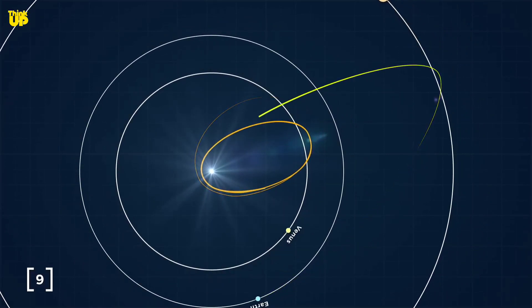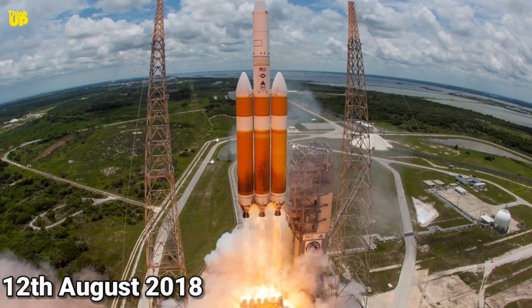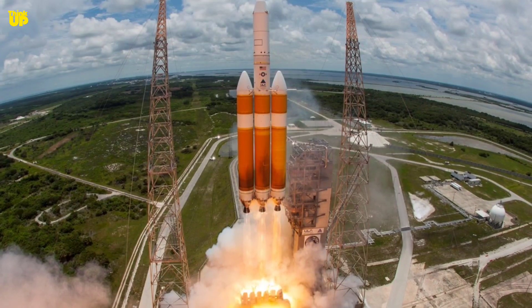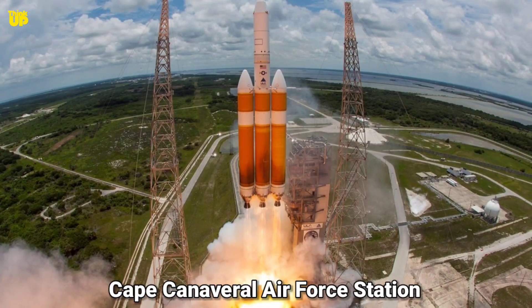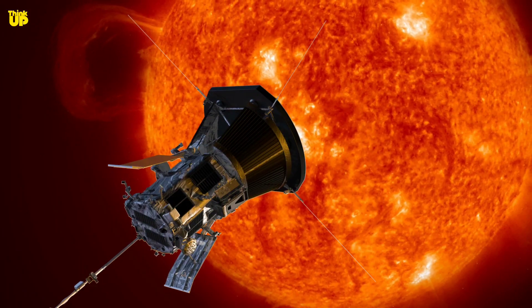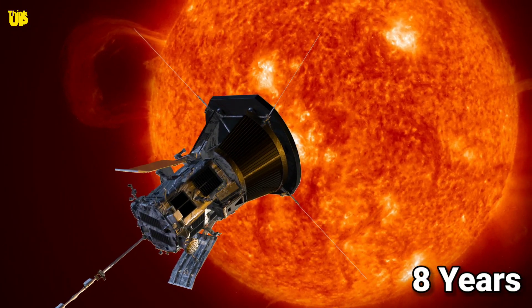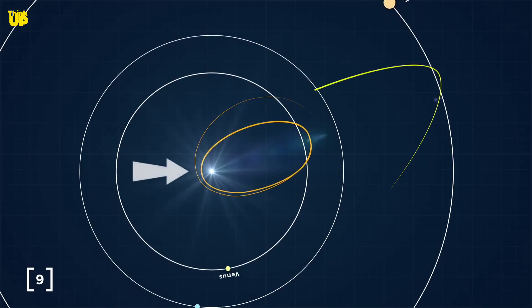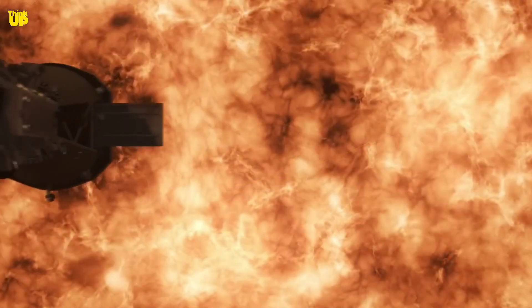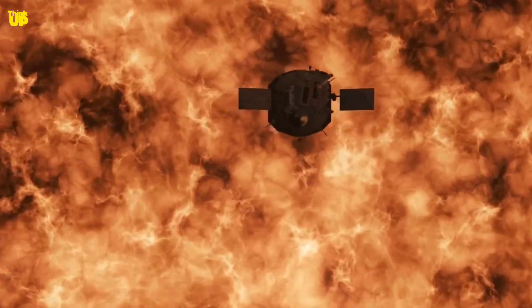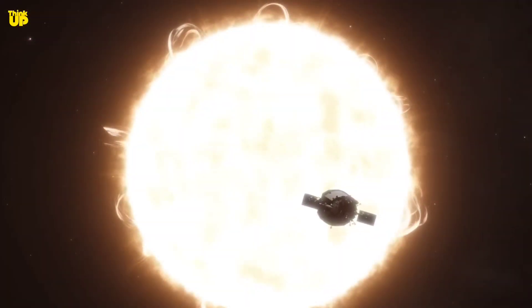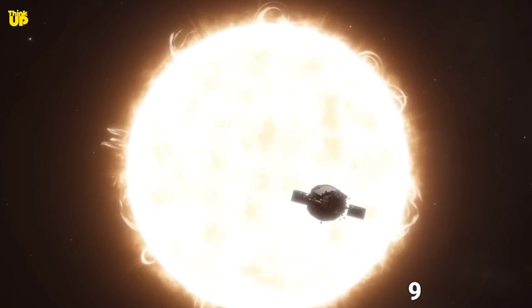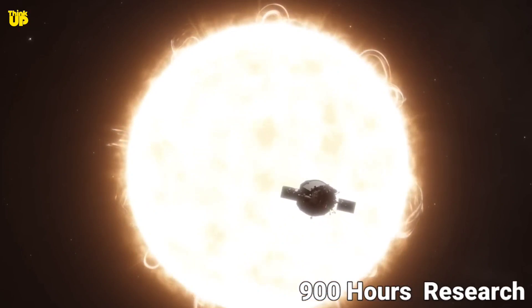Only then would it be able to reach its closest point to the Sun. On August 12, 2018, the Parker Solar Probe launched from Cape Canaveral Air Force Station. NASA has planned a time frame of eight years for this mission. Venus will be used 24 times to reach the closest point to the Sun. There are 37 hours in each rotation on which there is a chance to do research on the Sun. In total over eight years, this probe will be able to do 900 hours of research on the Sun.